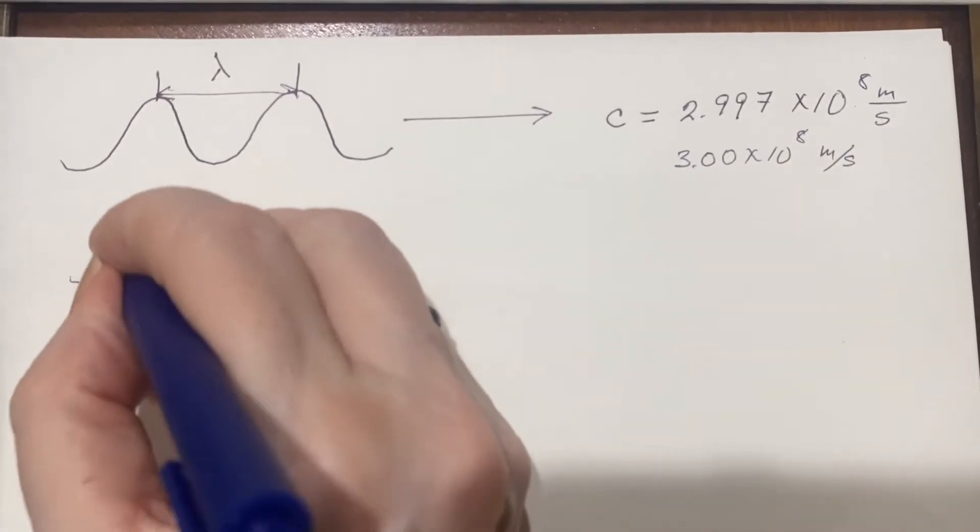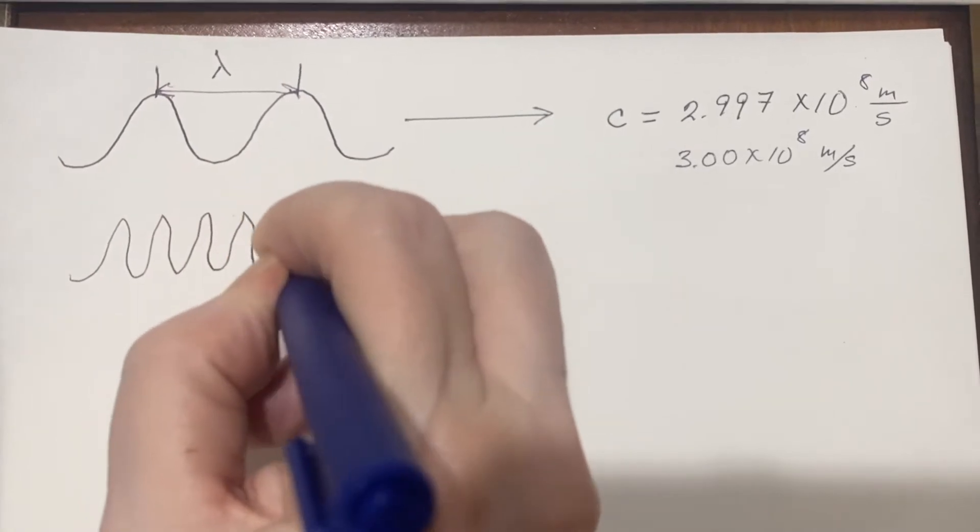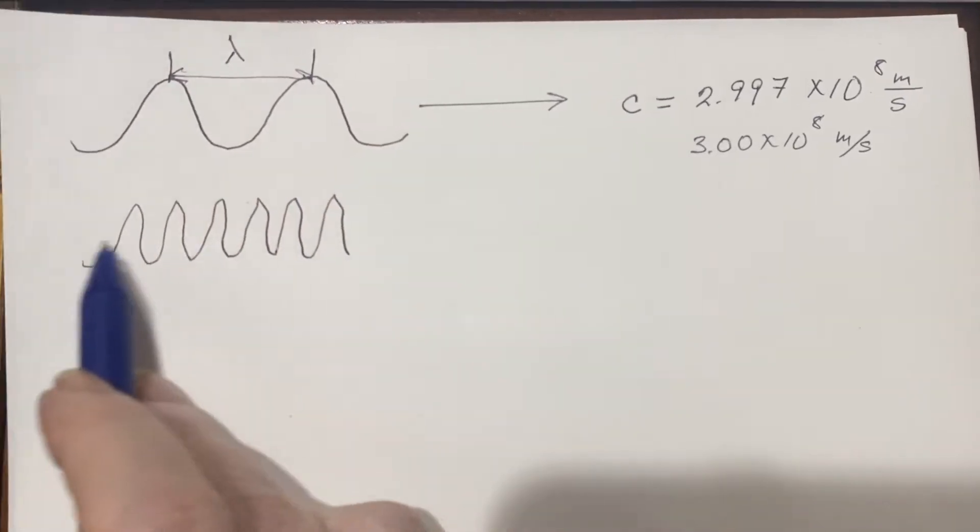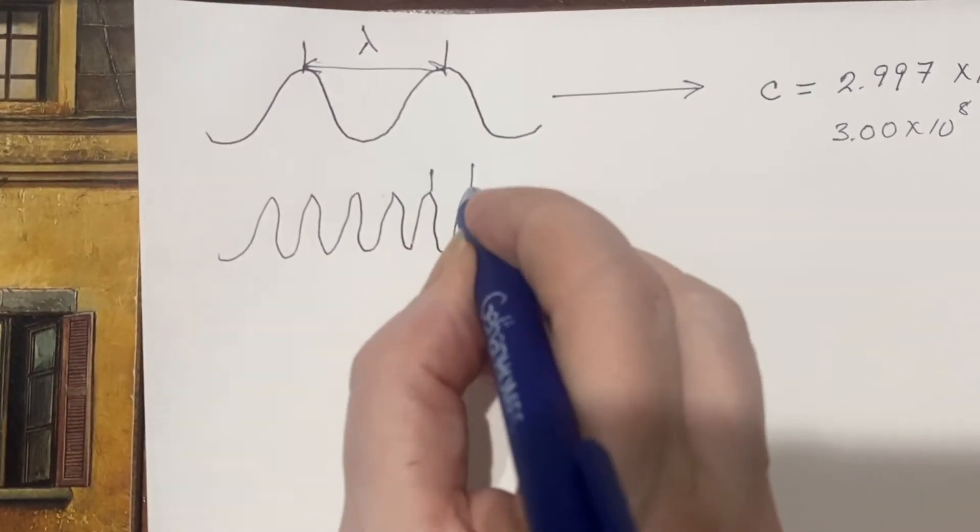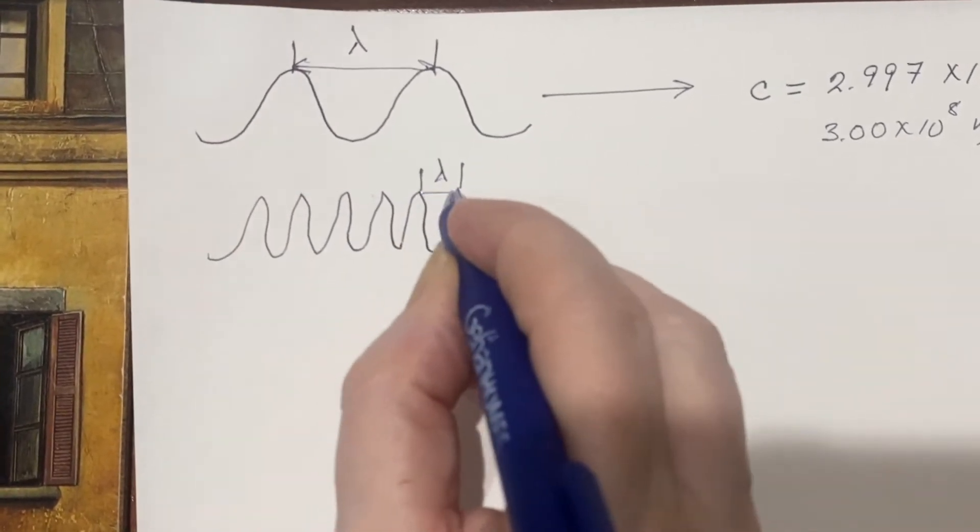So if I have this one, it's moving at this speed. What if I have another one that's, you'll have to pardon my drawing here. It's not going to be fantastic. It's not going to look very much like a sine wave because I'm trying to do it too quickly. You can see that this wavelength is quite a lot smaller, right?